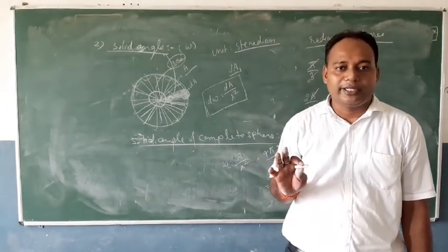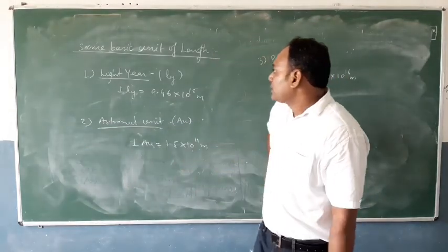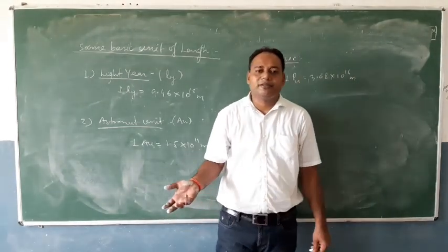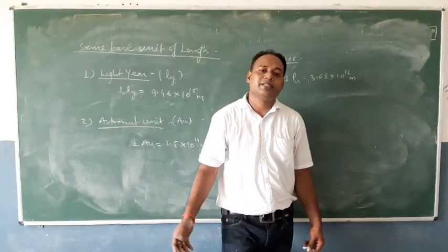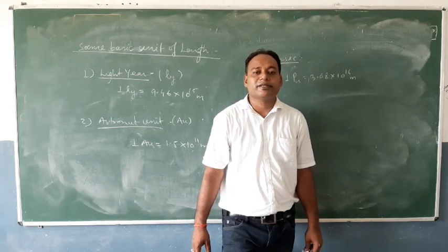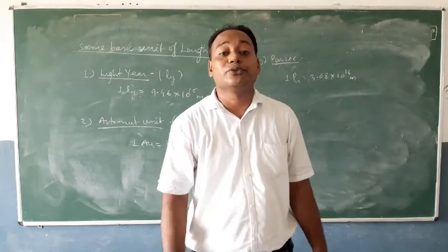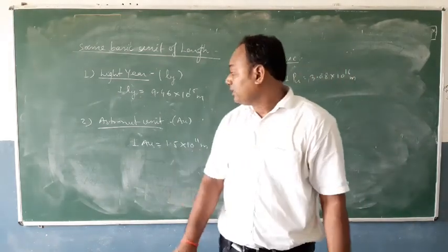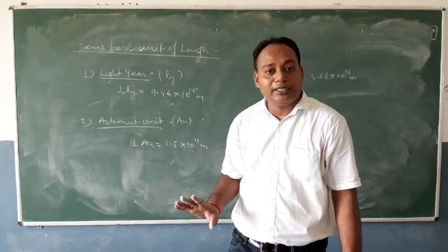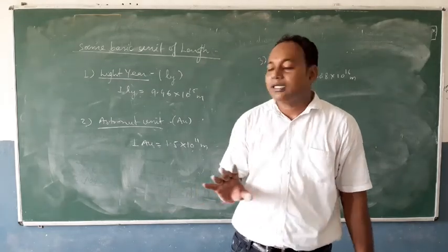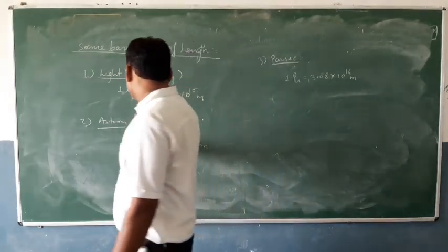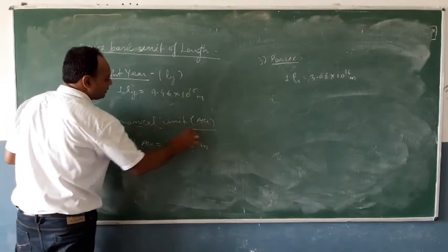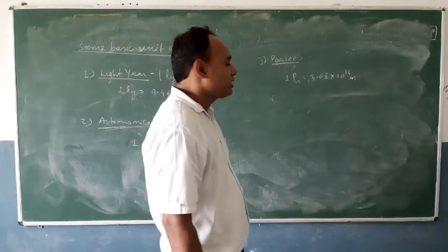We have now studied the plane angle and the solid angle. Our next topic is some basic units of length. You can measure very large lengths using units such as the light year, the astronomical unit, and the parsec.